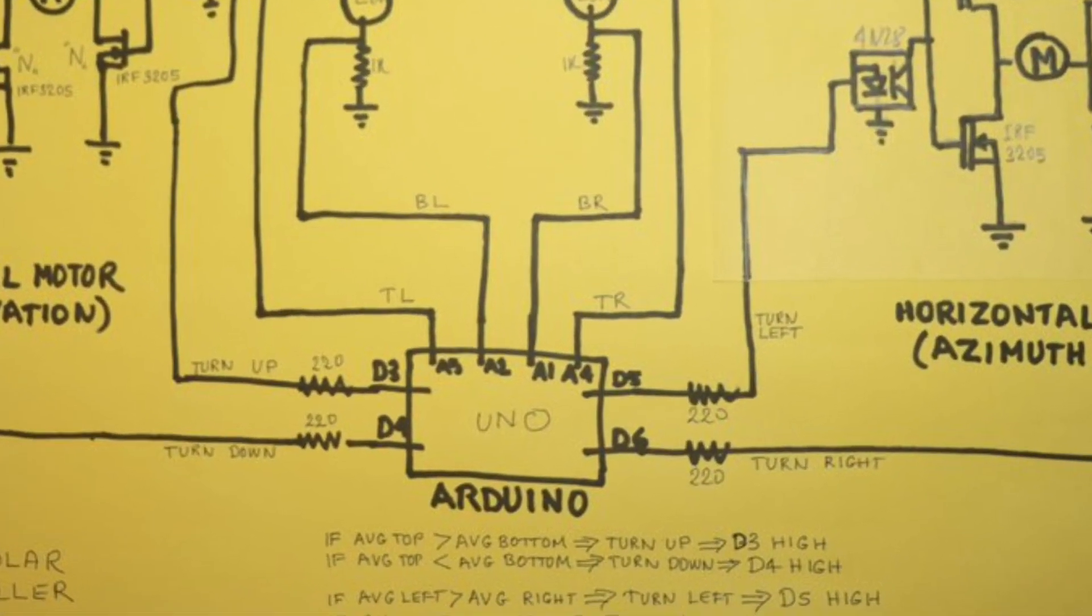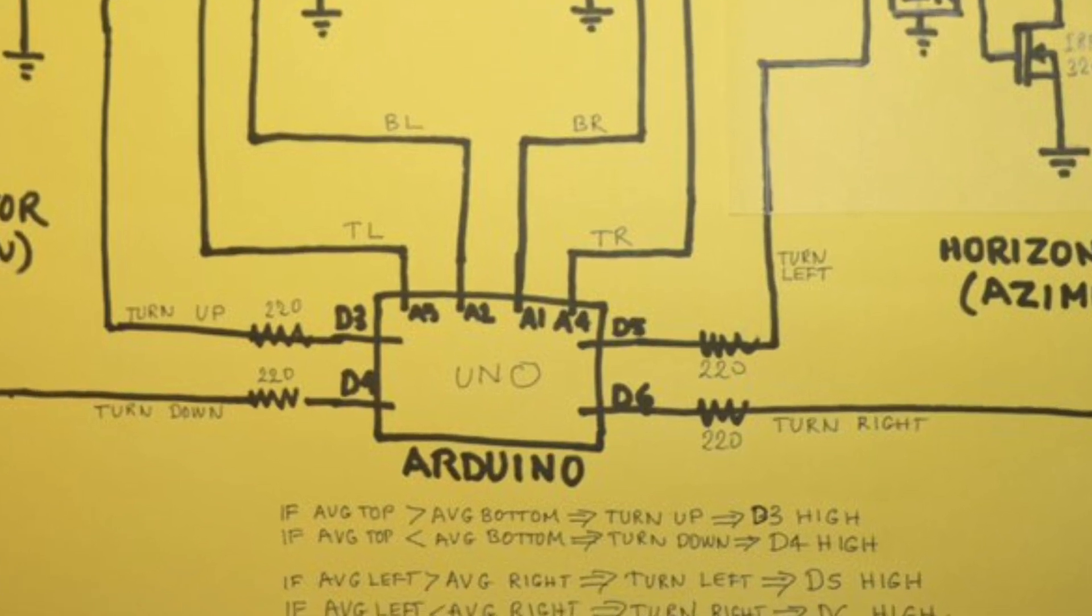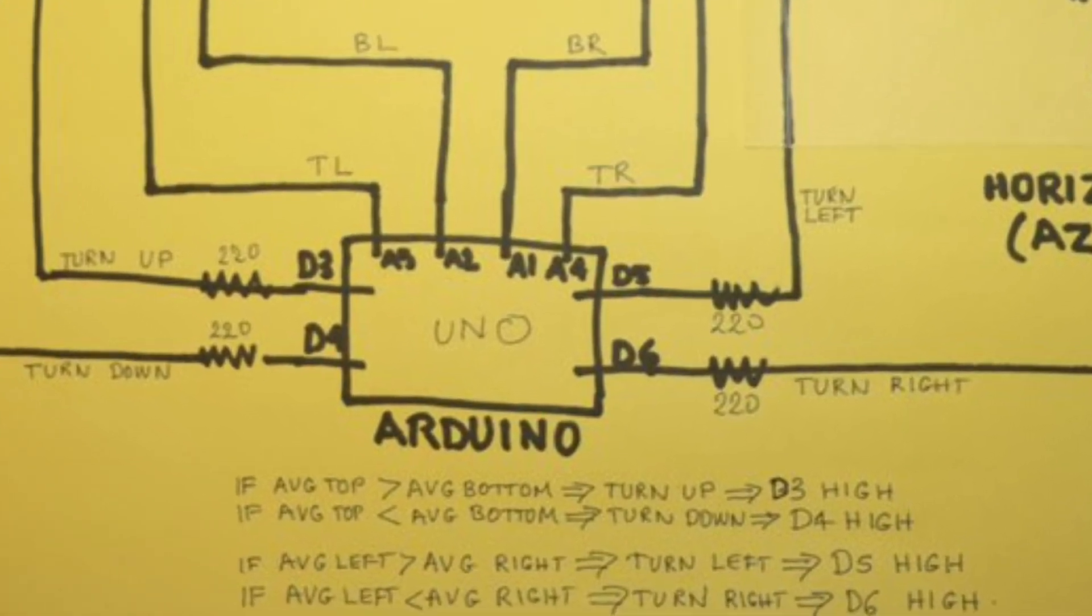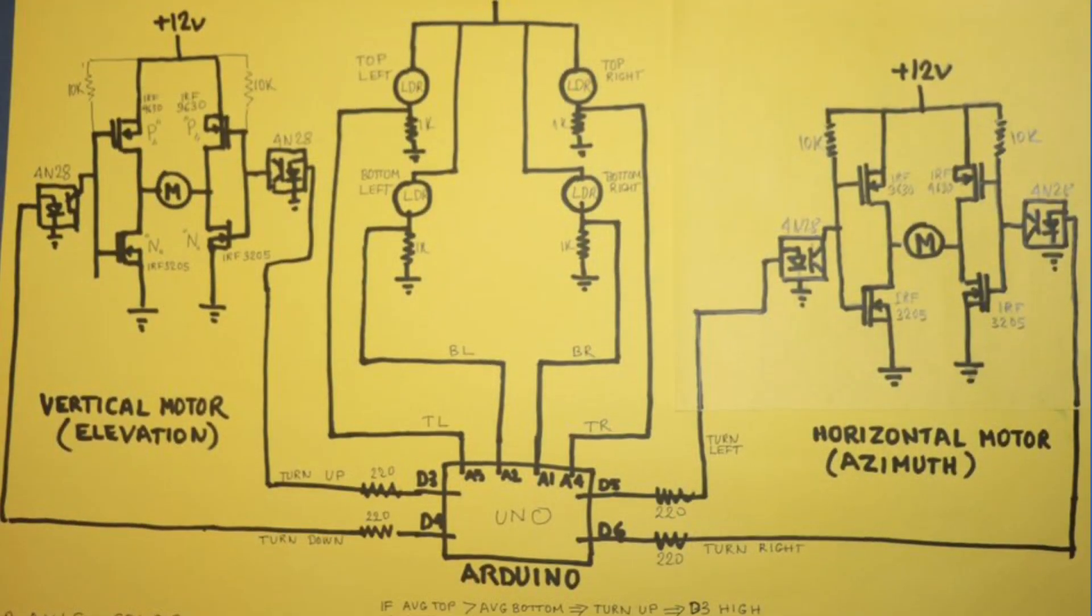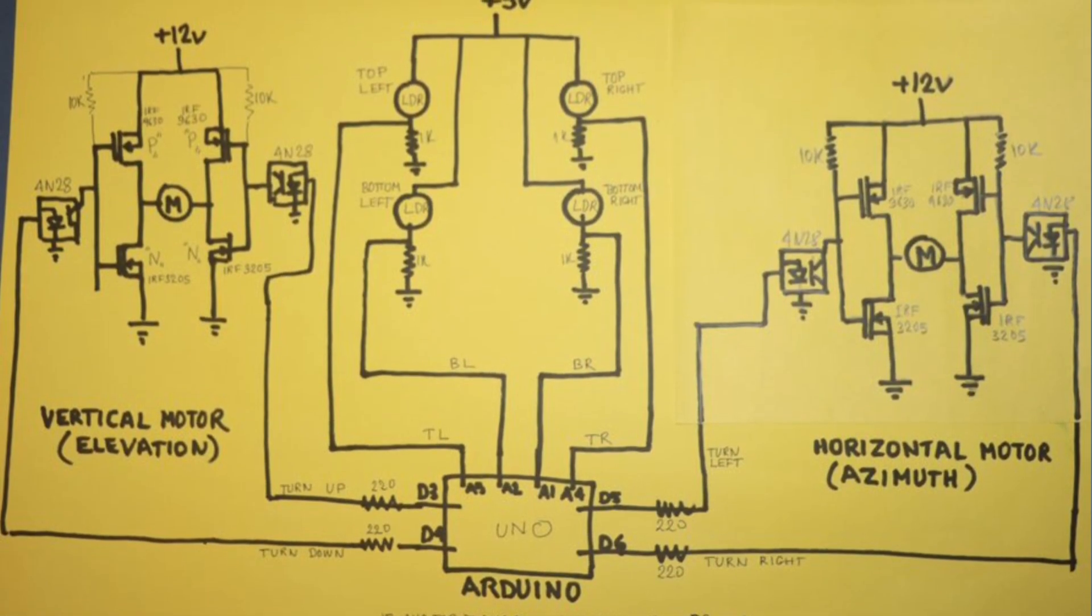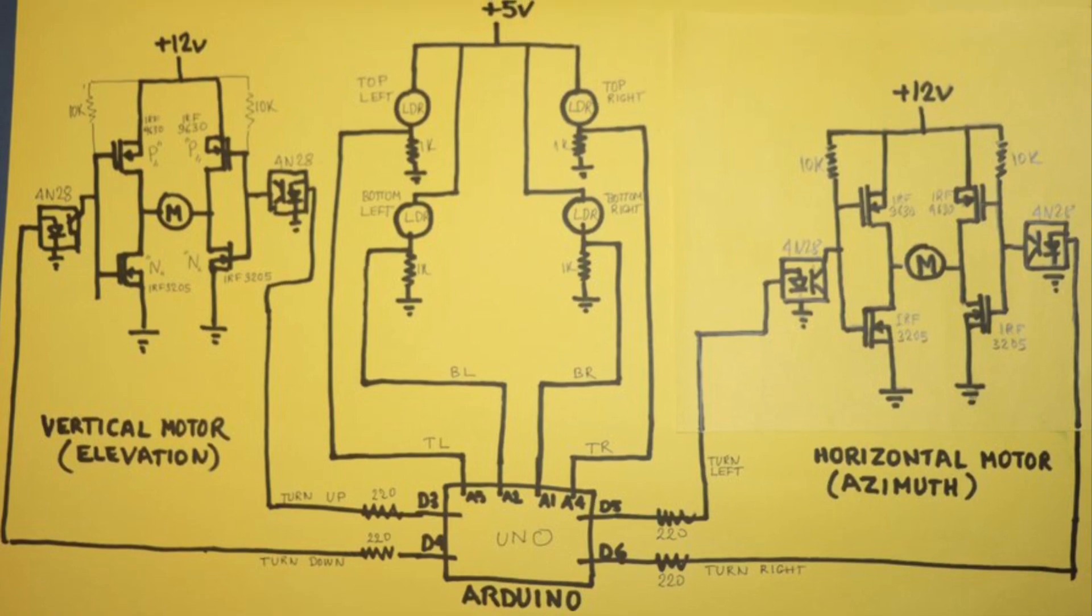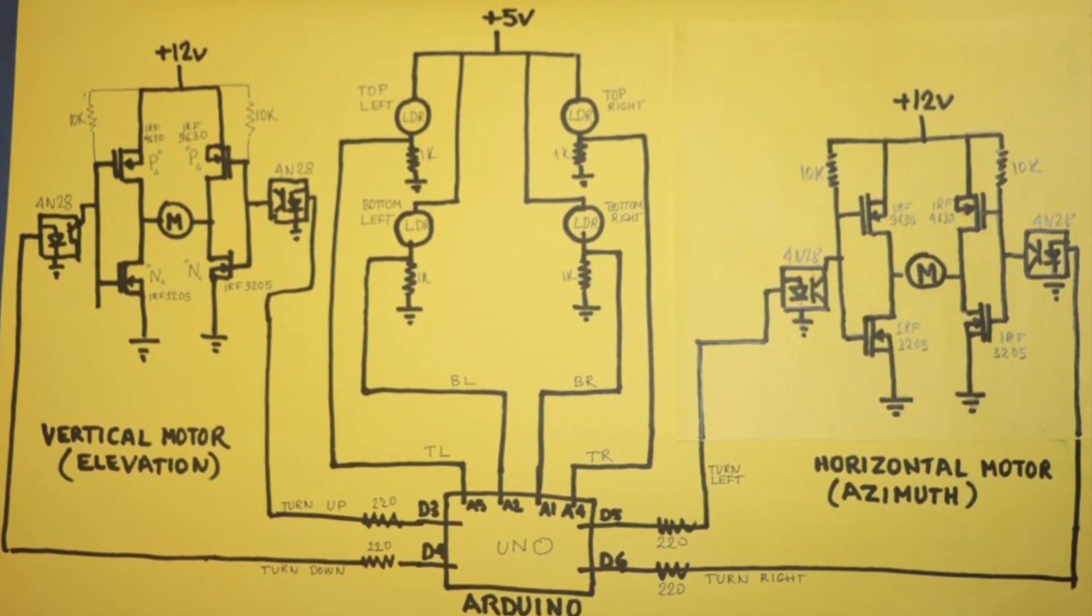Bottom middle is the Arduino Uno computer where four analog inputs are connected to four LDRs and four digital outputs connected to the two H-bridge circuits. The circuit is indeed very simple and works fine.